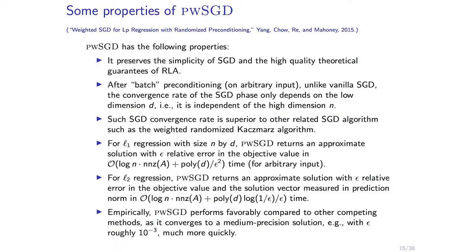Where does this perform well empirically? It performs best compared to other methods at medium precision — not extremely low, not extremely high. If you really want high precision, you've got to iterate a lot. If you want very low precision, the batch phase is tricky because it's a fixed footprint of cost, so you need to get a little bit better than very low precision to pay for that.